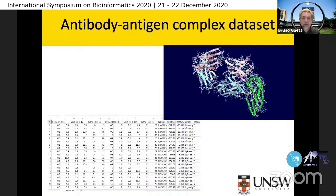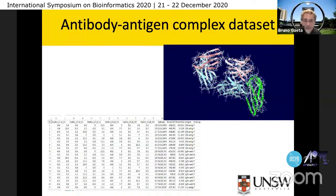Our problem with trying to learn antigen-antibody binding is the lack of data. So what my student Chaoye has started doing is to build datasets of antibody-antigen binding so that we can use that for machine learning. If we have a dataset that's well-labeled and useful, then we can try to start learning binding and hopefully be able to predict what antigen an antibody is going to bind based on the antibody sequence.